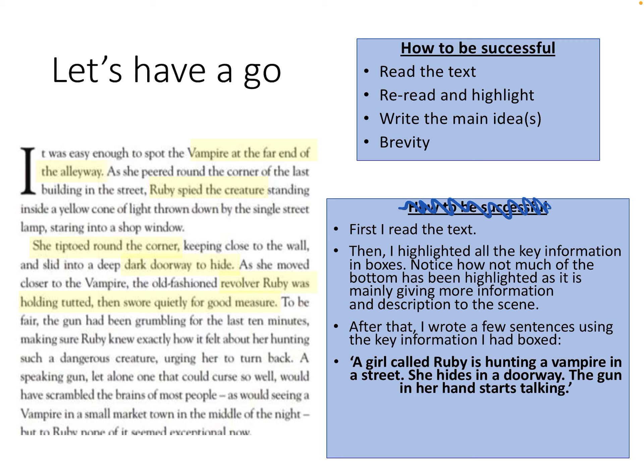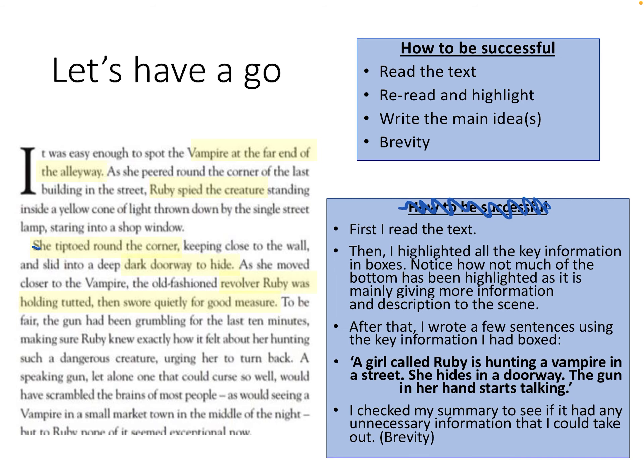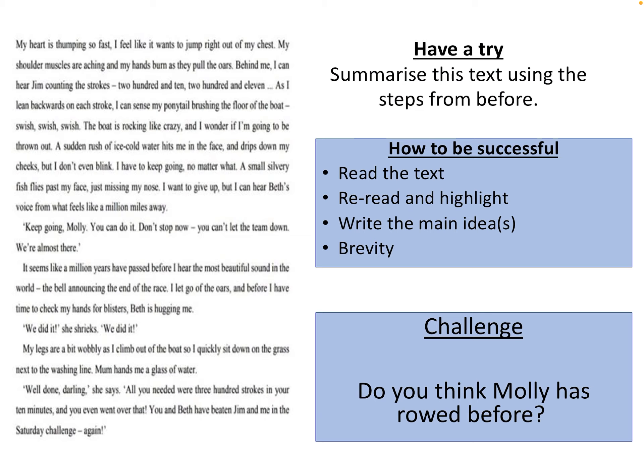Do you think that is a good summation of what's happening? So: there's a vampire in the alleyway, she's hunting a vampire, she's spotted the creature, she's hidden in the doorway, and the gun has started to talk to her. I think that sums up pretty much what happened. I checked my summary to see if it had any unnecessary information and took out all the unnecessary bits.